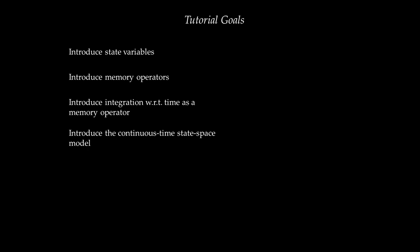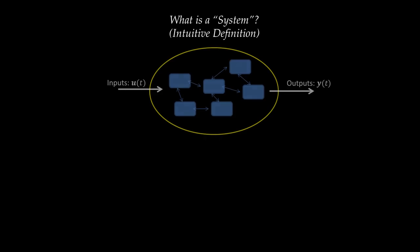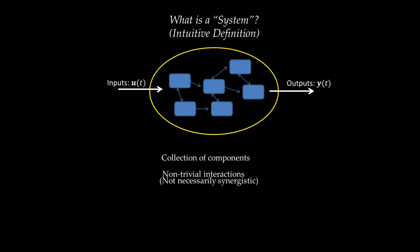Before going into state variables and state space models, I'd like to go back to the previous tutorial's idea that a system is a collection of components with non-trivial interactions and a well-defined boundary separating it from its environment. Mathematically, what matters is that we have inputs u(t) and outputs y(t), and the system is a mapping from inputs to outputs. A system is dynamic if and only if it has memory.